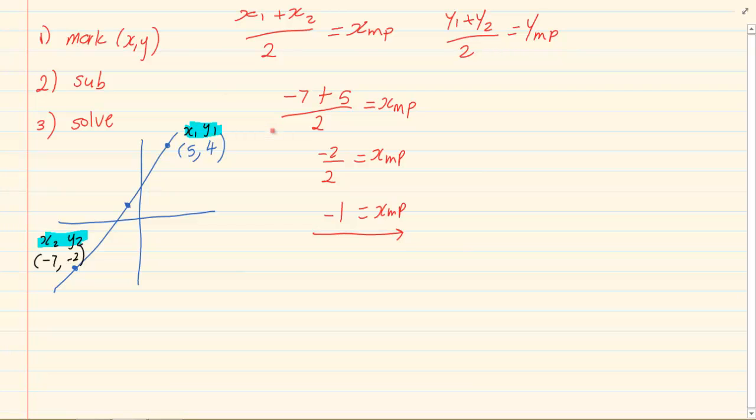Now let's do the y. I would have 4 + (-2) all over 2 equals the y of the midpoint. Now a plus and a minus give me a minus, so I have 4 - 2 which is 2. 2 over 2 equals 1. So the y of my midpoint is equal to 1.